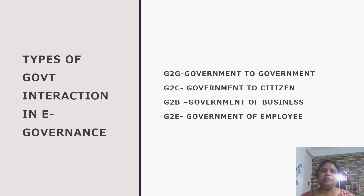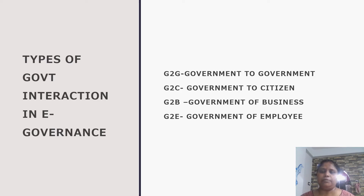There are different types of government interaction in e-governance: G2G - Government to Government, G2C - Government to Citizen, G2B - Government to Business, and G2E - Government to Employee.